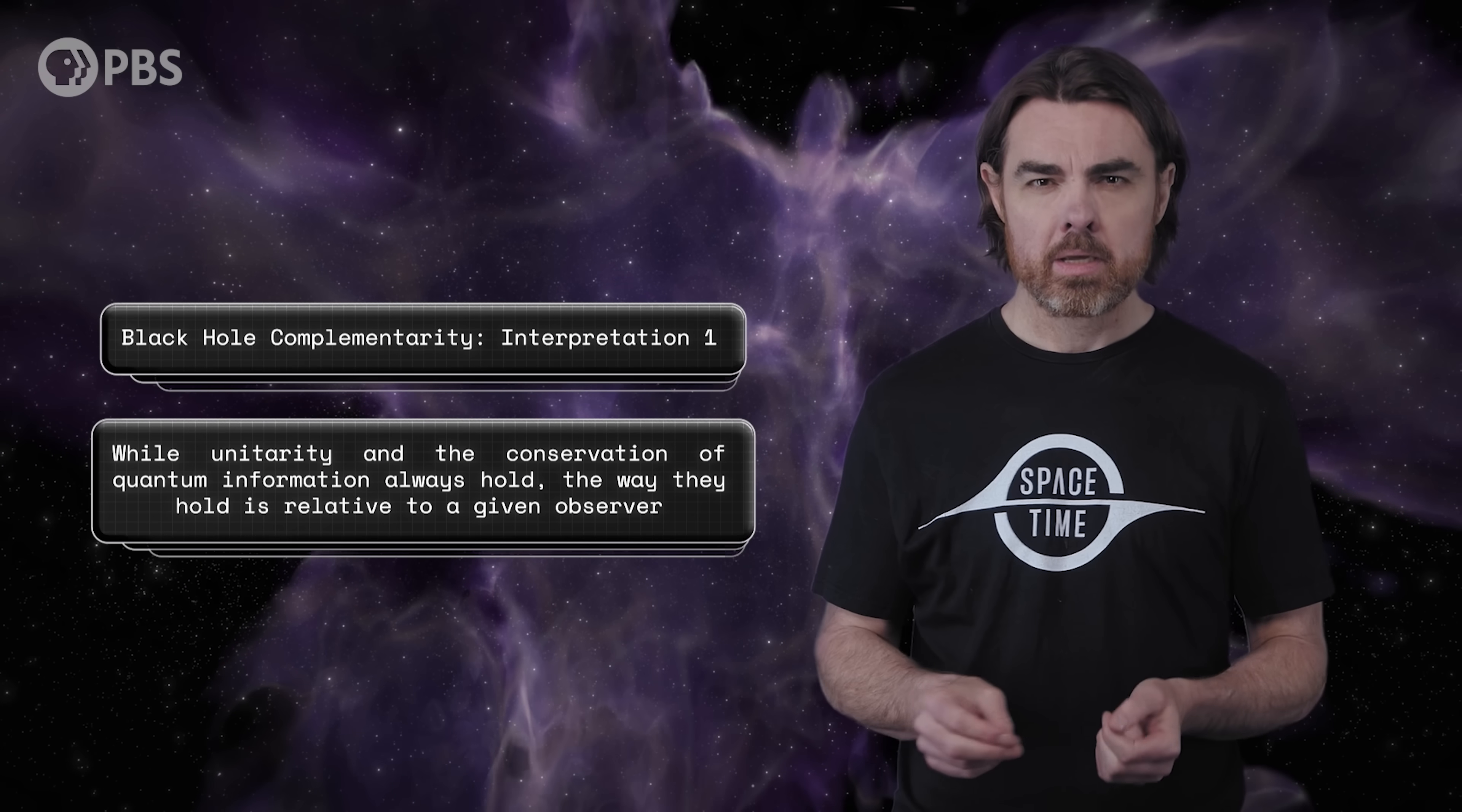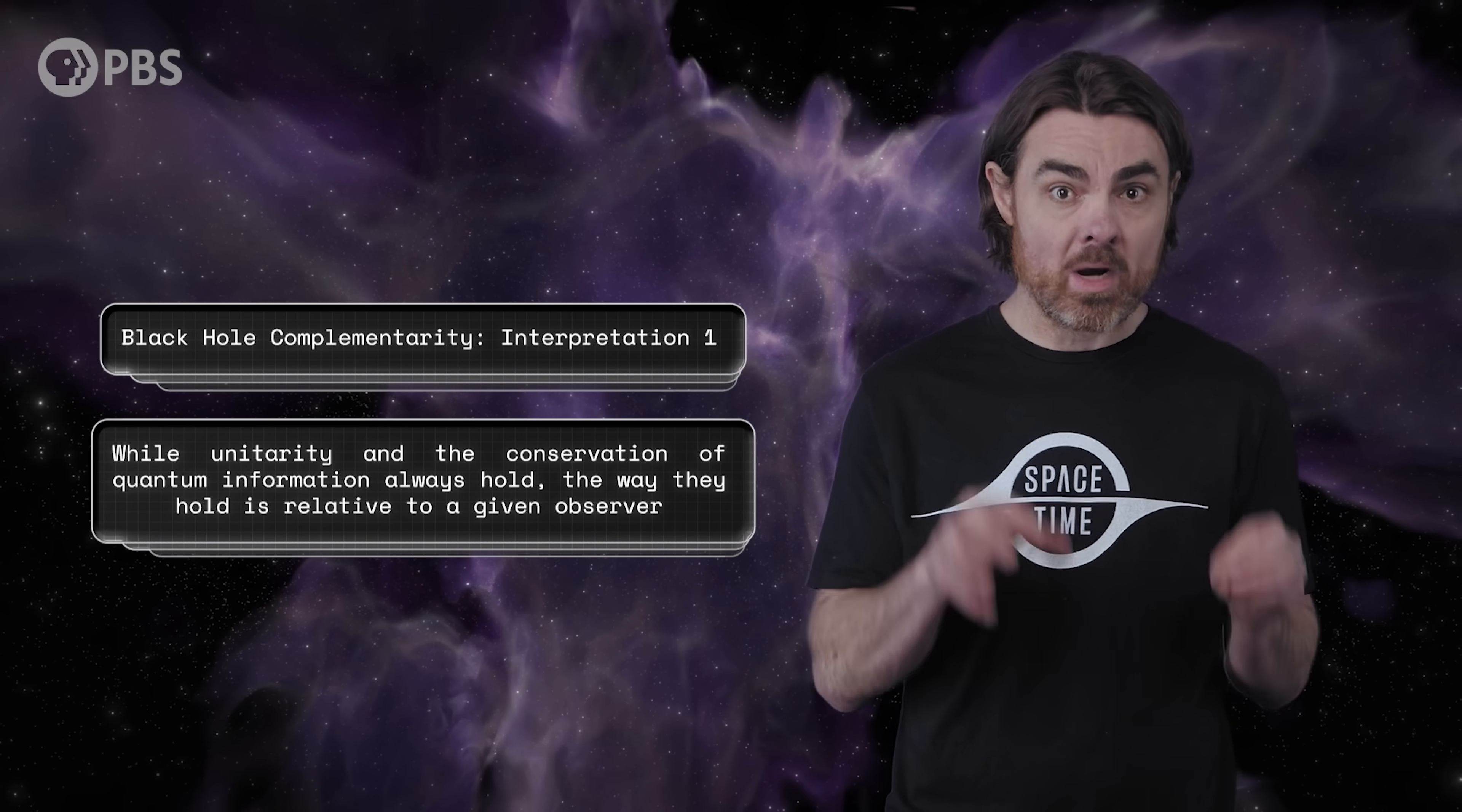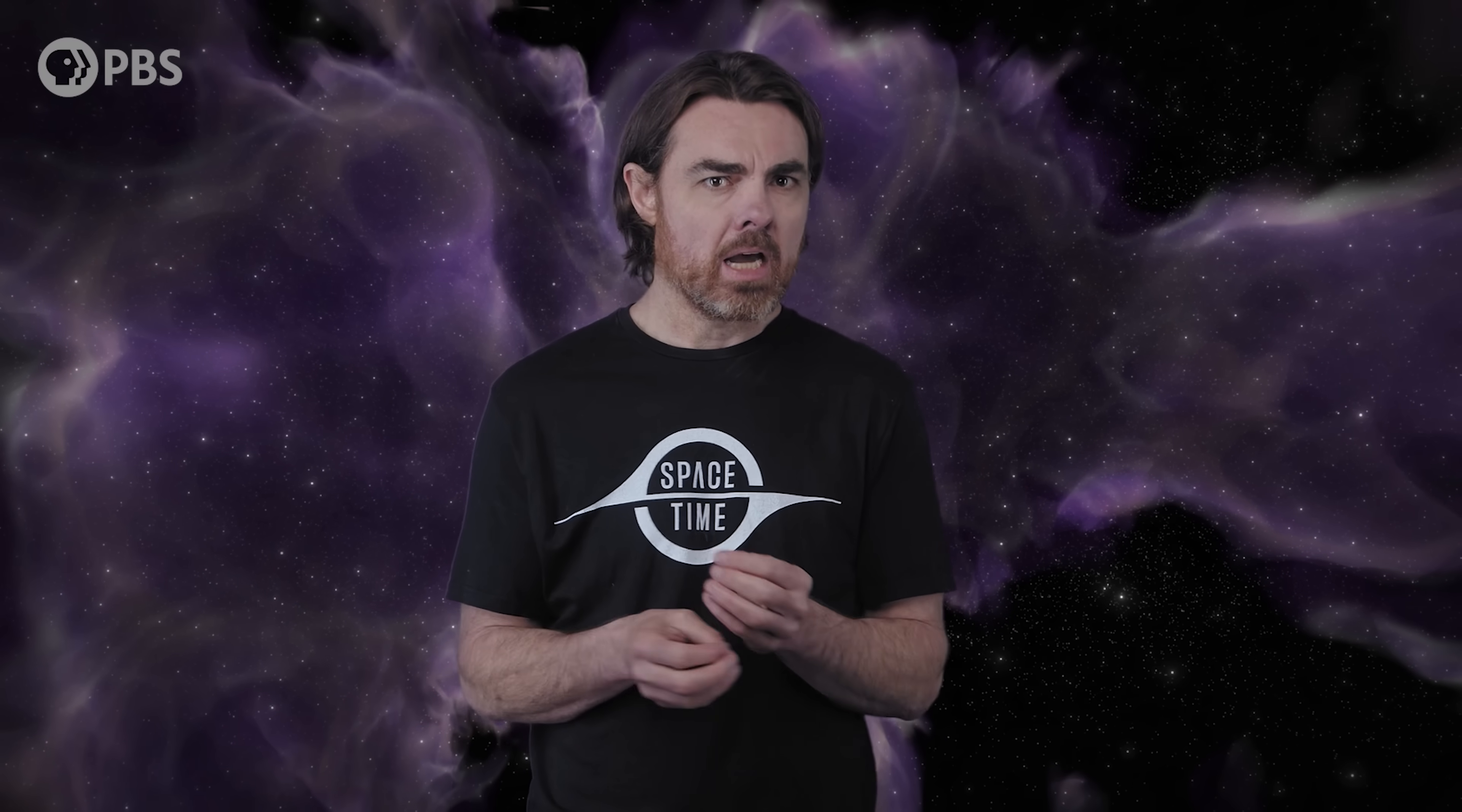So interpretation one. If black hole complementarity is right, it may be telling us that while unitarity and the conservation of quantum information always hold, the way they hold is relative to a given observer. Alice will always find that quantum mechanics works perfectly and that there are never any contradictions. So will Bob. But for him, quantum mechanics might work perfectly in a different way. The key is that Alice and Bob can never communicate, so no contradiction is ever discovered. If this is right, then it's telling us something about the wave function and quantum information and what they really represent, and that our description of the world depends quite radically on our reference frame.